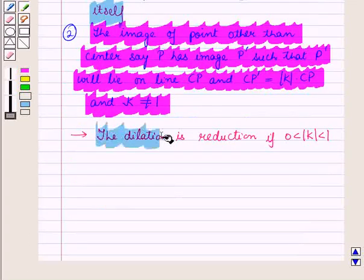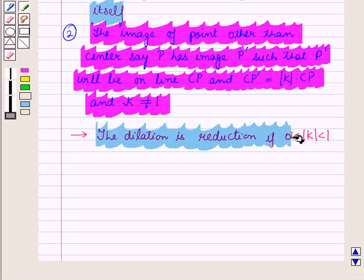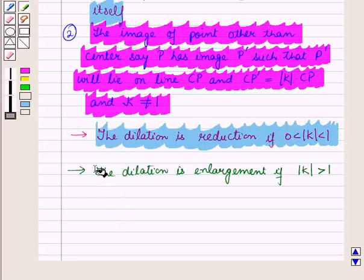Now the dilation is a reduction if absolute value of k lies between 0 and 1, and the dilation is an enlargement if absolute value of k is greater than 1.